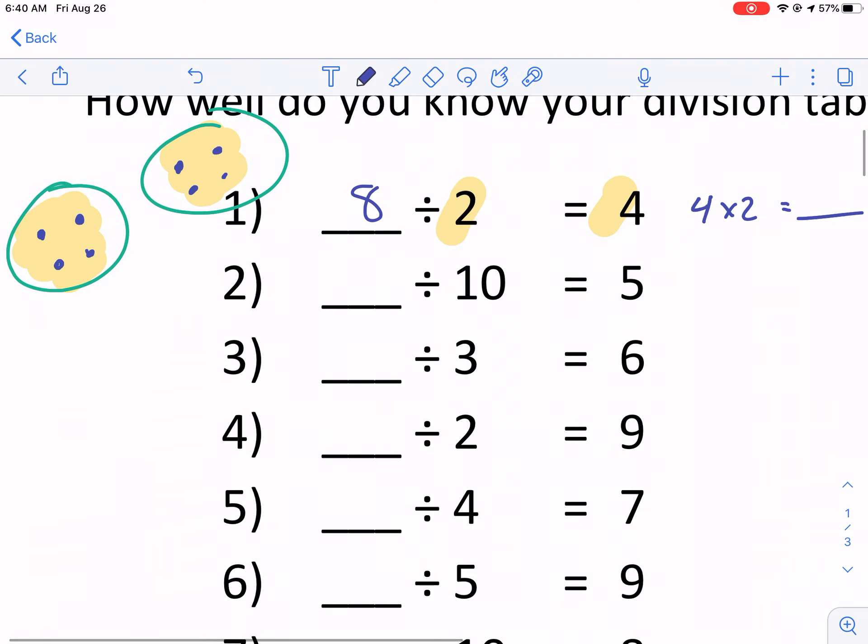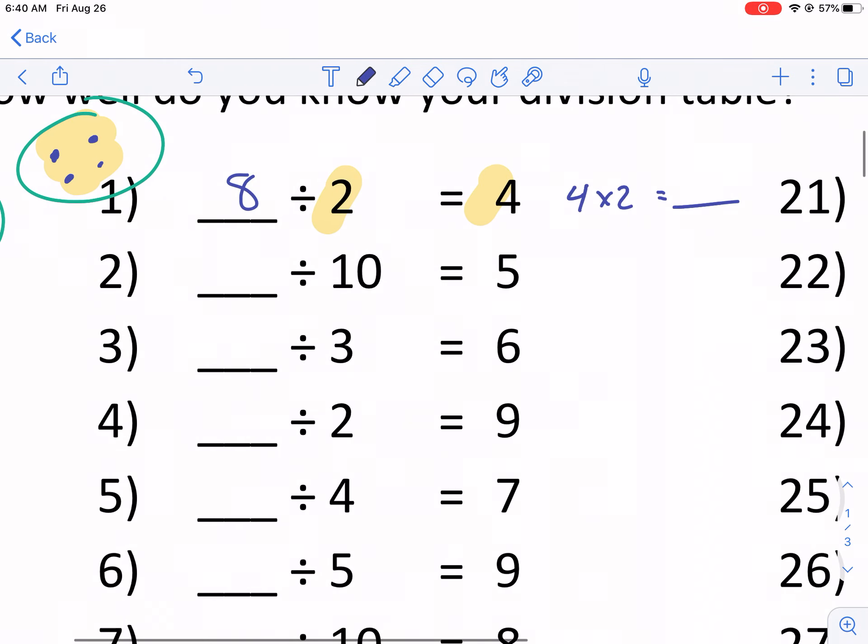And again, here we have divided by 10. So that one's going to be hard to draw 10 circles. So actually, I'm going to use the multiplication method for this one. I know that if I have 5 in each group and I have 10 groups, what I started with was 50. And so 50 divided by 10, does it equal 5? Yes, it does.